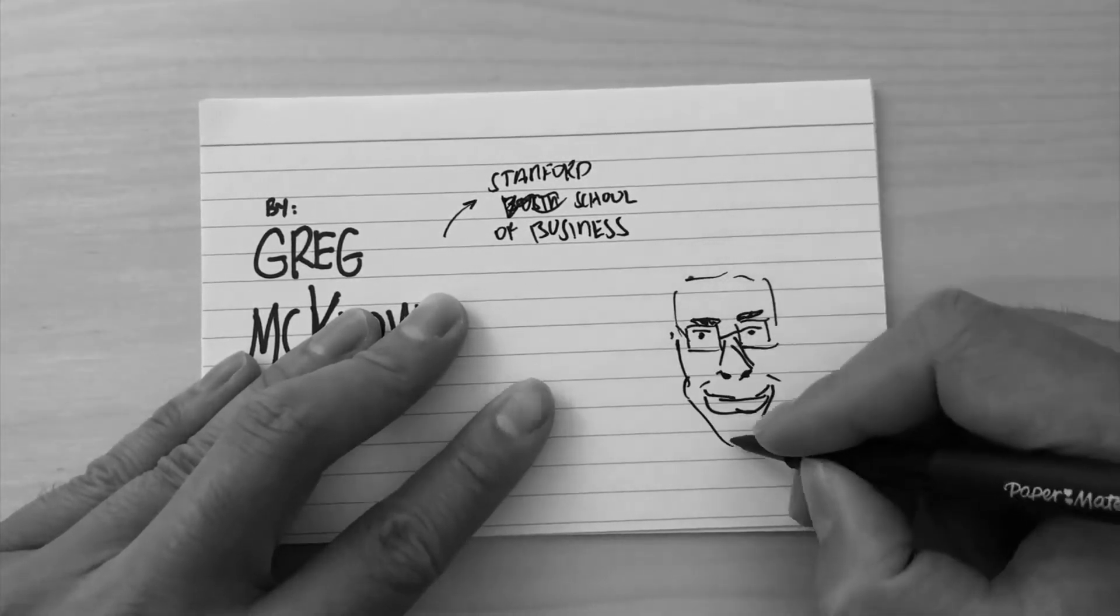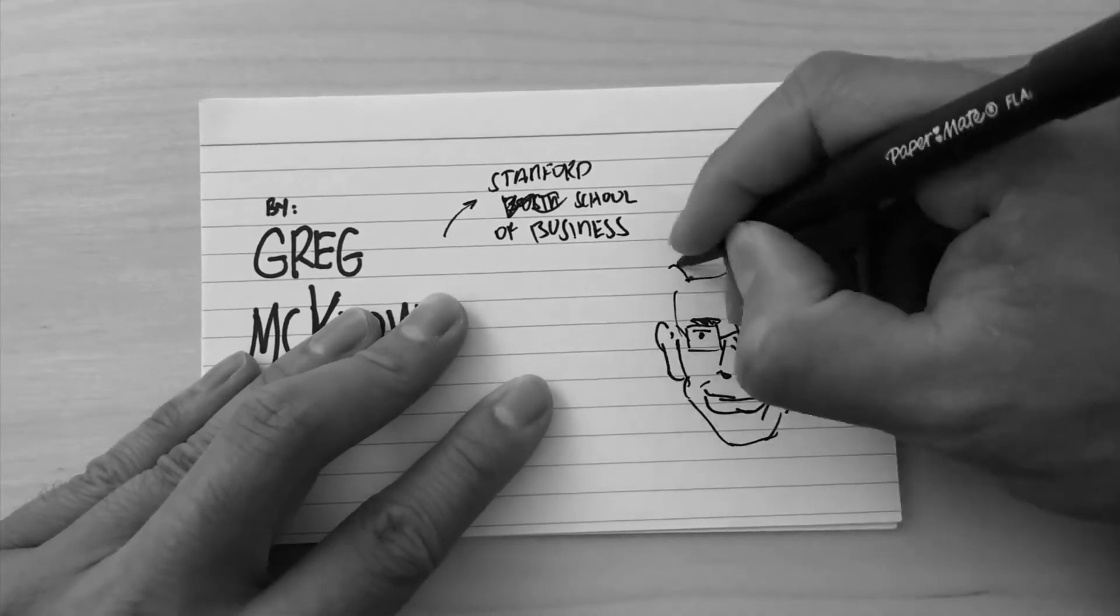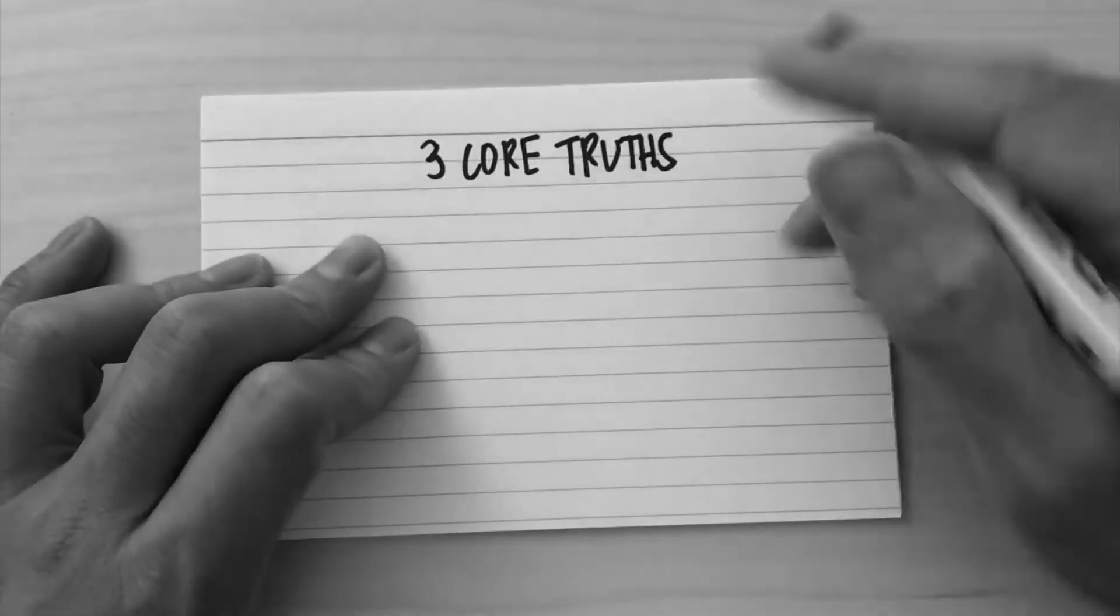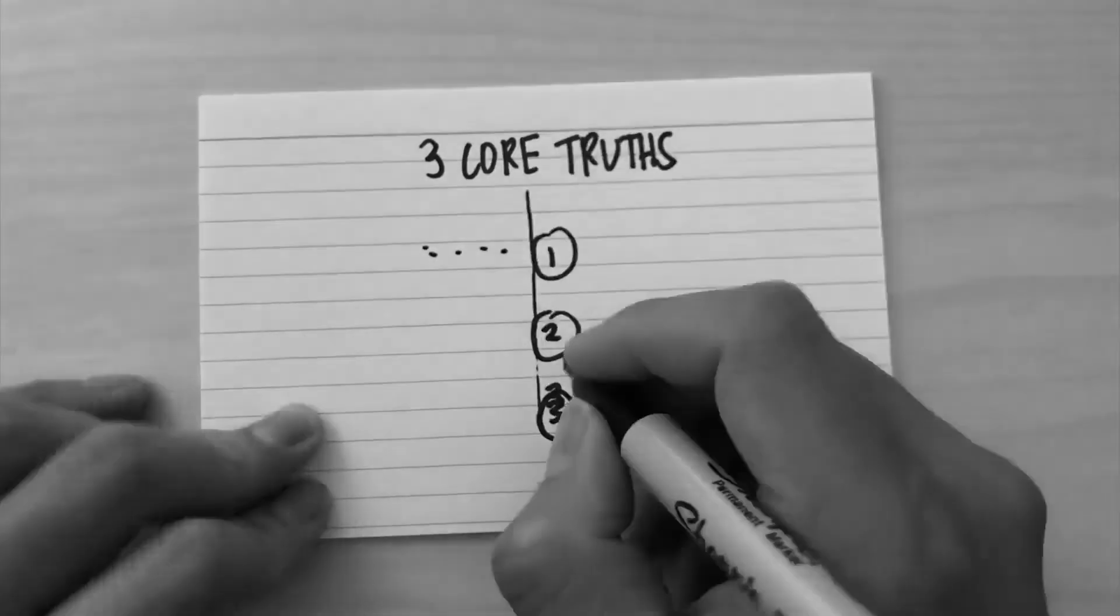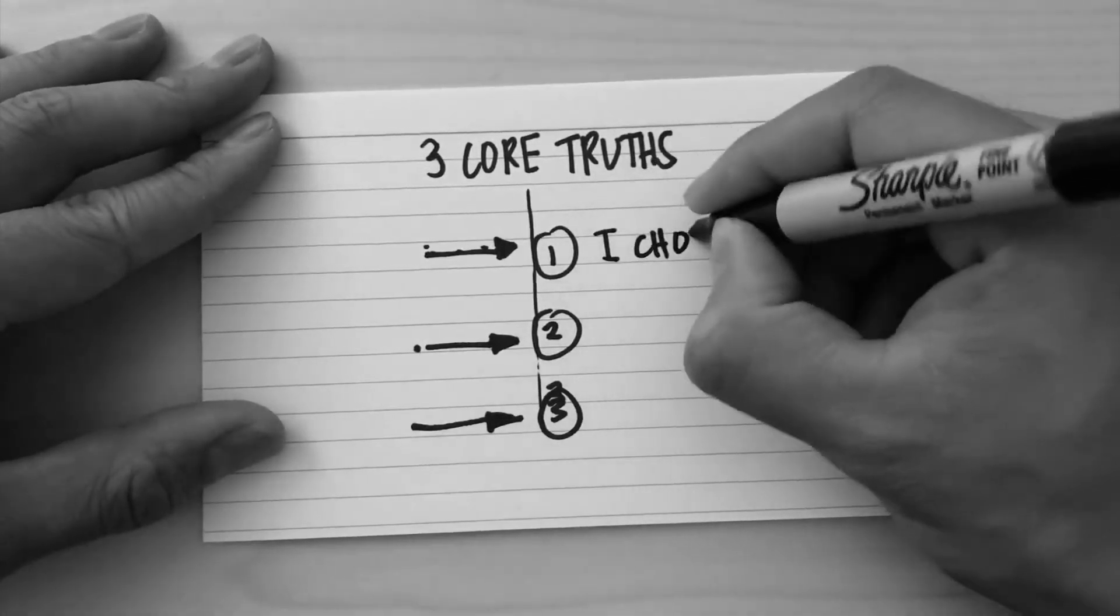Here are some things from the book. One of the concepts described are the three core truths, so I'll talk through the three different ones. The first one is 'I choose to.'